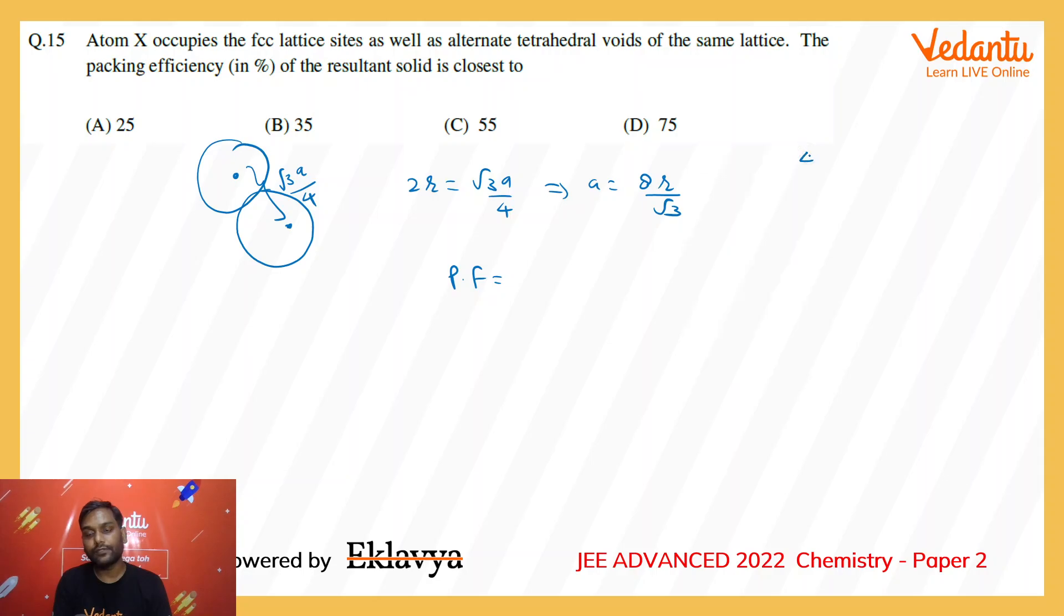Four atoms in the tetra voids, plus eight at the corners which contribute one-eighth each, and six on the faces contributing half each - that's eight total. So total volume of the atoms would be 8 times 4 by 3 pi r cubed...